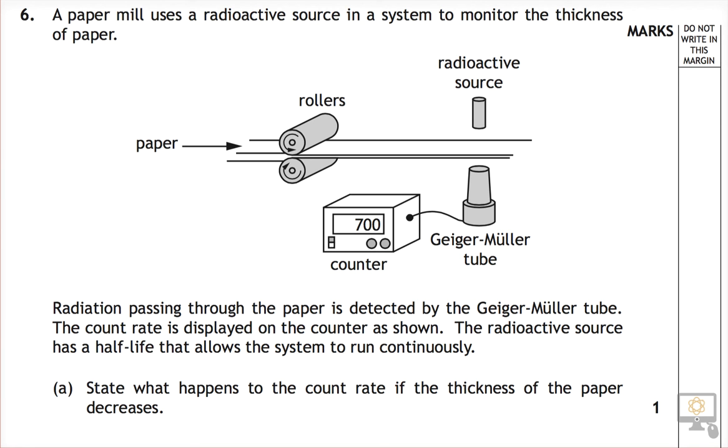This is a 2015 National 5 physics paper, question number 6. A paper mill uses a radioactive source in a system to monitor the thickness of paper.